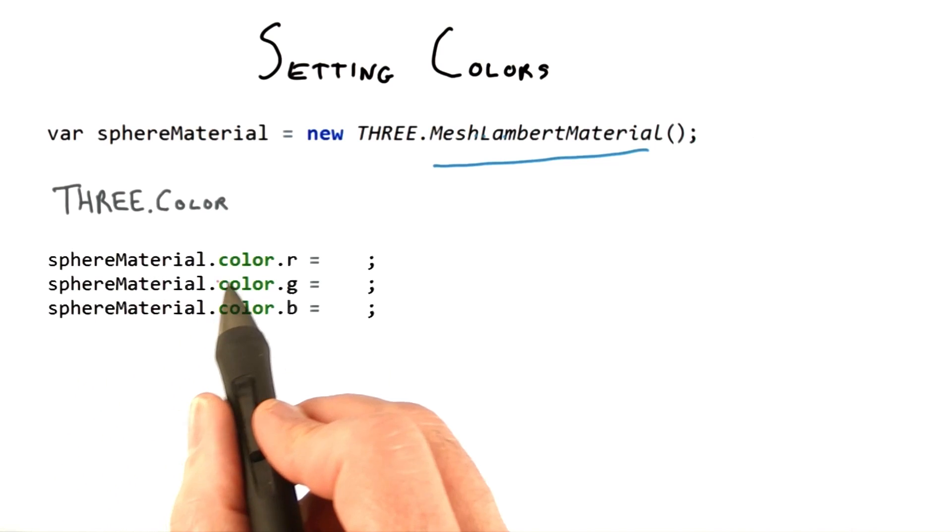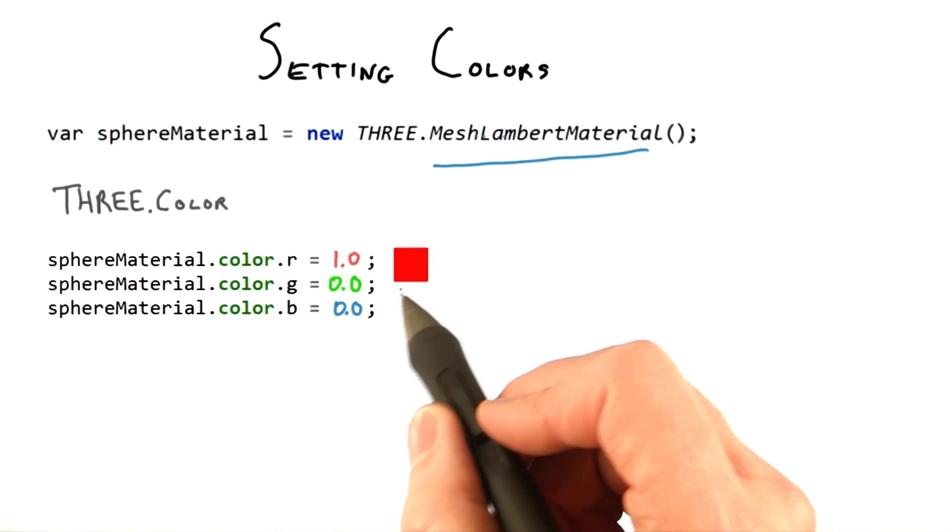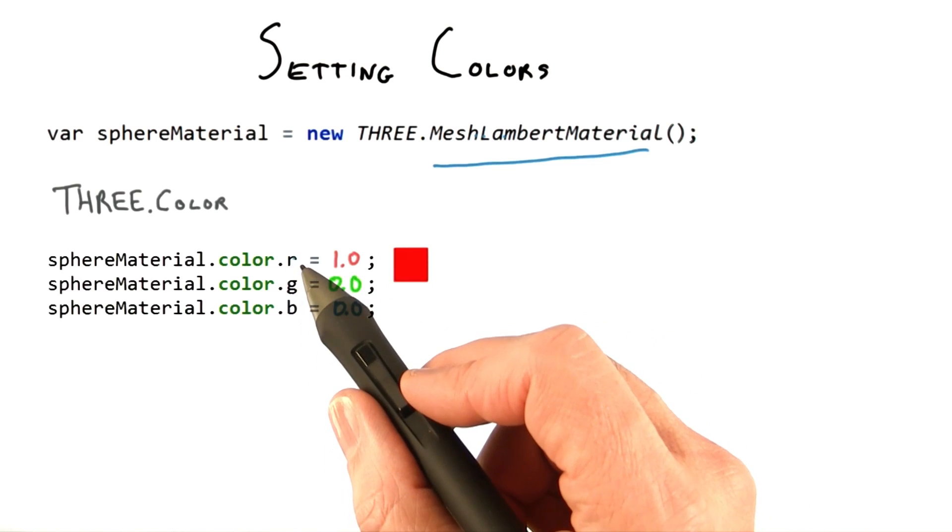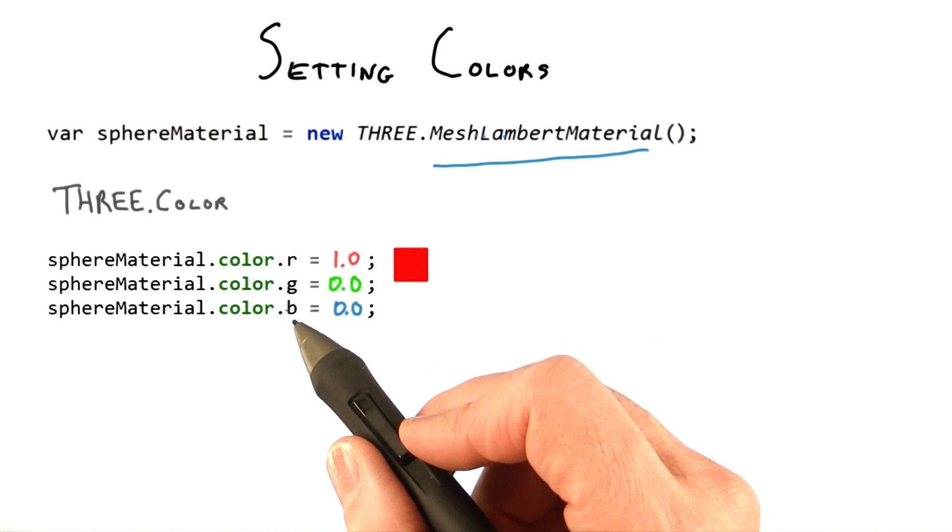One method is to set the R, G, and B channels separately. Here I'm setting the color to red. This directly sets the variables R, G, and B in the color attribute to the desired values.